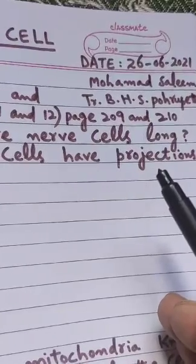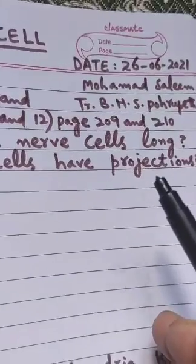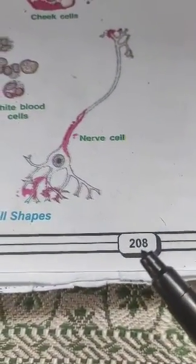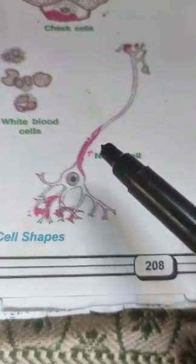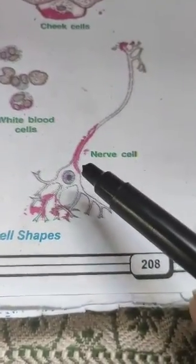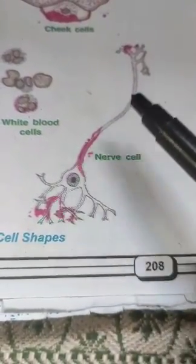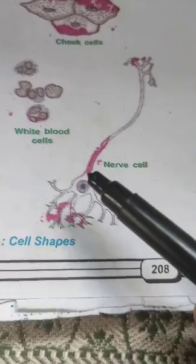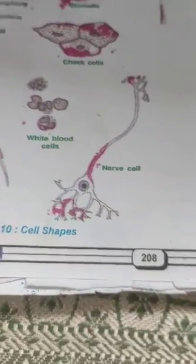I have to tell you about nerve cells. This is page number 208 of your textbook. Here are the nerve cells. Our question is: why are nerve cells long and why do they have projections — that is, why do they have branches?